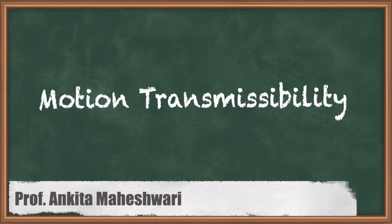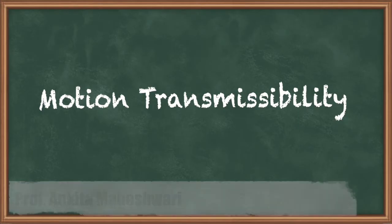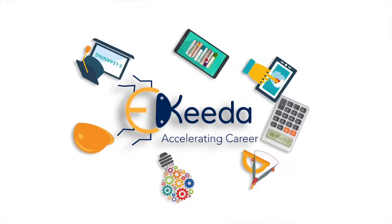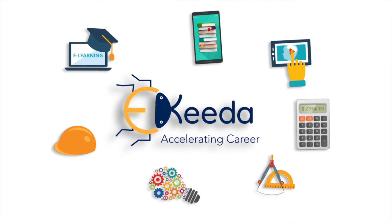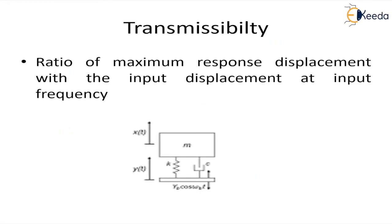Hello everyone. In this video we will discuss displacement transmissibility. Displacement transmissibility is the ratio of maximum response displacement to the input displacement at the input frequency. If a system is on a fixed foundation and the foundation vibrates, the mass also moves because of the base movement. The ratio of the mass displacement to the base displacement is defined as the displacement transmissibility.